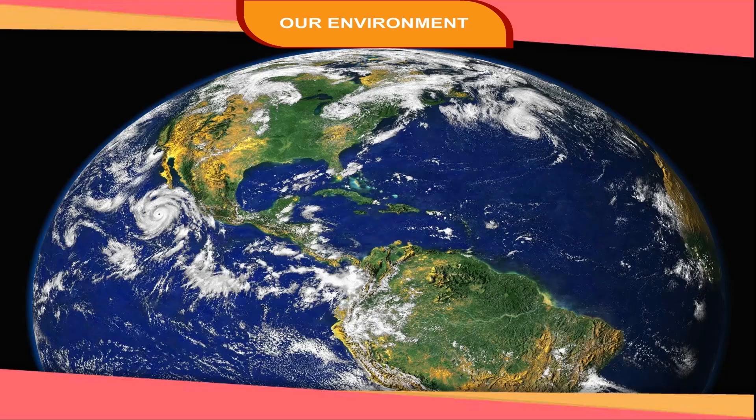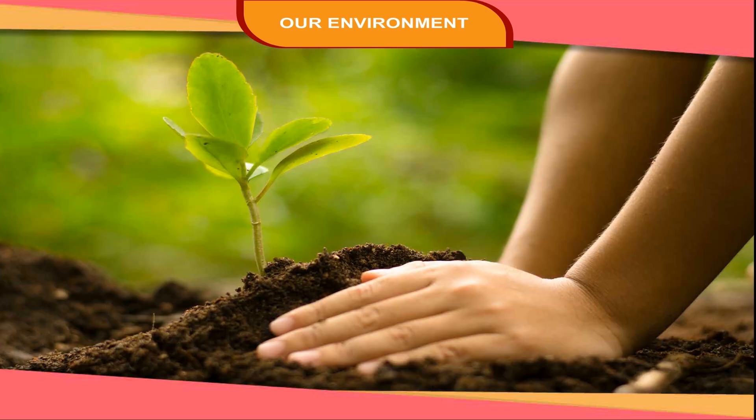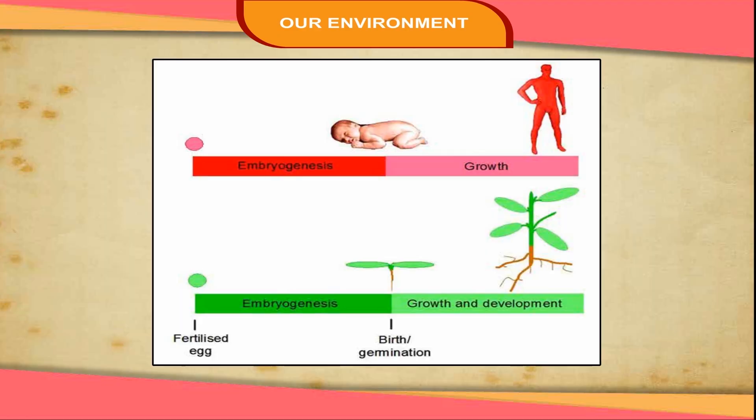Our Environment. Earth is the only planet in our solar system that sustains life. All kinds of plants and animals live on Earth. The word environment denotes the surroundings or external conditions influencing the development or growth of people, animals and plants. Thus, we can say that the physical and biological conditions in which a living organism lives collectively make up its environment.